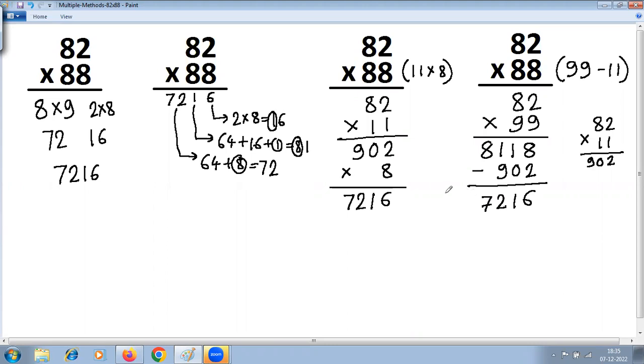So you have solved that one problem, 82 multiplied by 88, using four different methods. First is multiplication special case, then multiplication vertically crosswise, then multiplication by series of 1, and here multiplication by series of 9. Like this, four different methods are used for solving the same problem. Thank you.